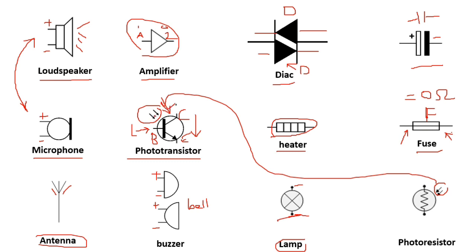This is the symbol of a photo resistor — it has the resistor symbol with arrows indicating light detection. To summarize: we've covered the loudspeaker, amplifier, DIAC, capacitors, electrolytic capacitor, microphone, photo resistor, phototransistor, heater, fuse, antenna, buzzer/bell, lamp, and photo resistor.